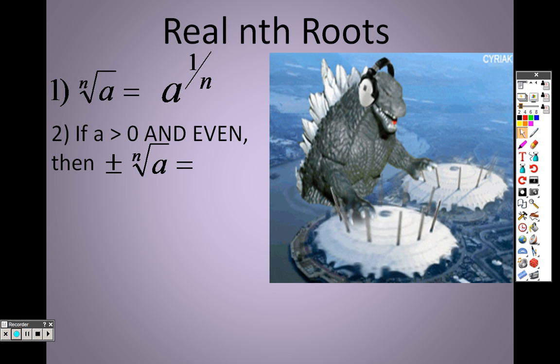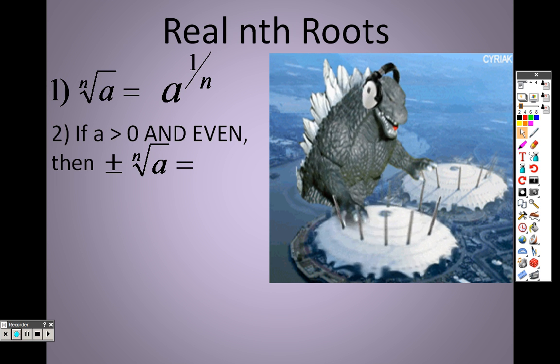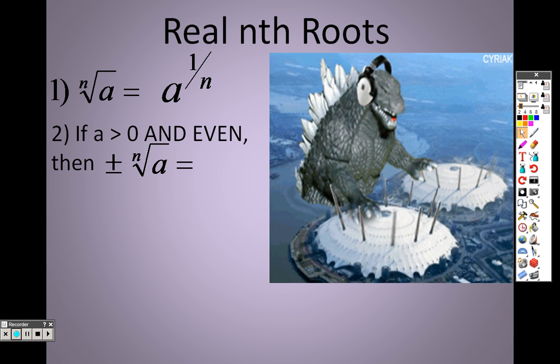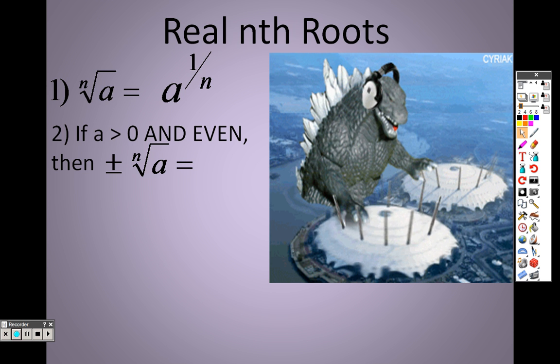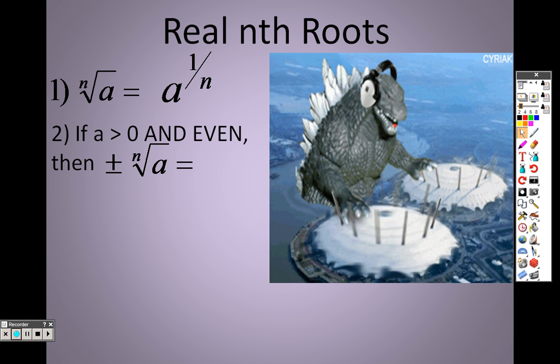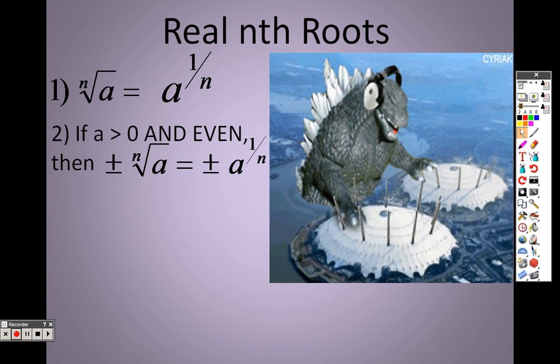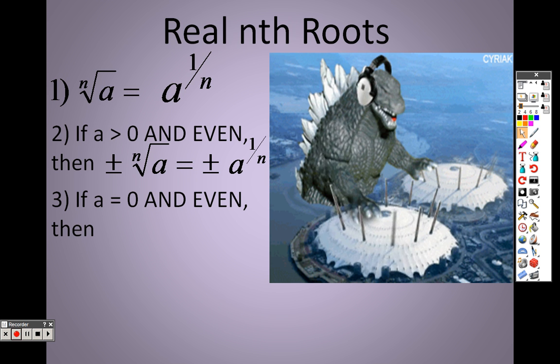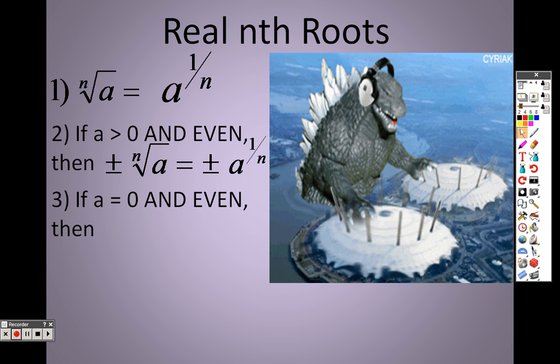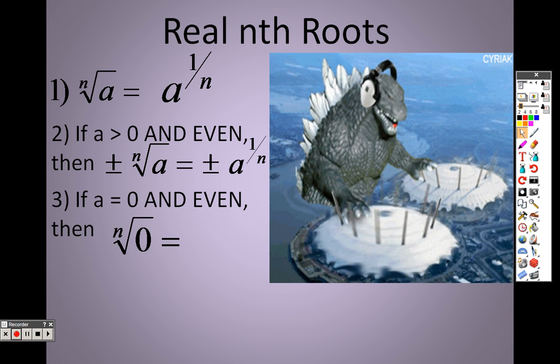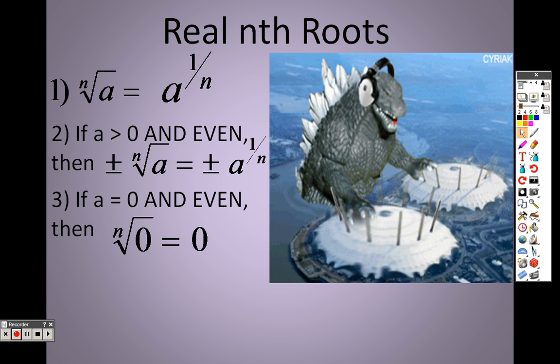Remember with square roots, square roots you have two answers, like plus or minus. Well, it's the same with the 4th root, the 6th root, the 8th root, the 10th root, the 12th root. Anything that's even, you're going to get a plus or minus with, so I want you to keep that in mind as well. So, if for some reason a equals 0 and it's even, then you're just going to get 0 as an answer. That's something else I want you to keep in mind there.